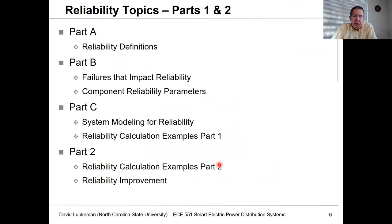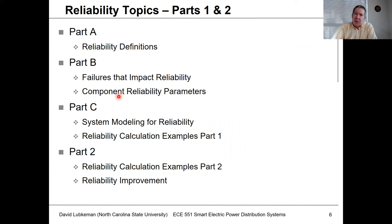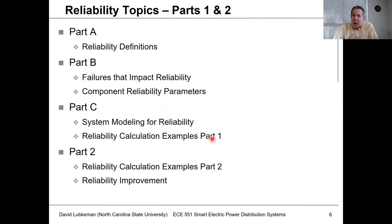For reliability analysis, I'm going to break this into two parts. In part one, I'll go through some reliability definitions, talk about the different sorts of failures in a grid that impact reliability, and get into how we parameterize this by component type. In part two, we'll start getting into system modeling — kind of like doing a power flow or short circuit study — for reliability analysis of distribution circuits, with a lot more examples once we cover the basis in part one.